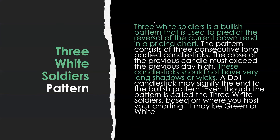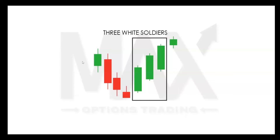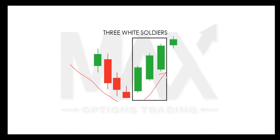Let's talk about three white soldiers. It's a bullish pattern used to predict the reversal of a current downtrend. These candlesticks should not have very long shadows or wicks — they can still have wicks, just not very long. A doji candlestick may signify the end of the bullish pattern. You can see the downtrend came all the way down here, then three white soldiers and continuation. The important thing to remember: they created new highs and had bigger bodies than wicks. New highs, small wicks or shadows, big bodies — that's what we're looking for.